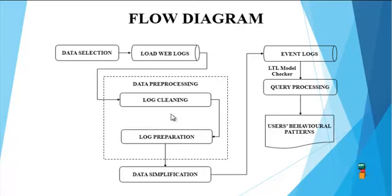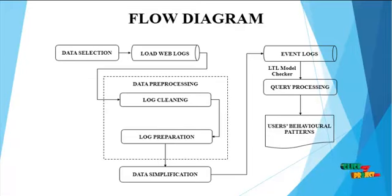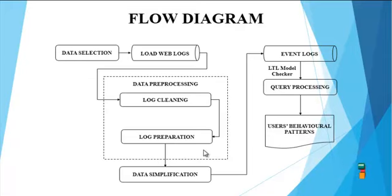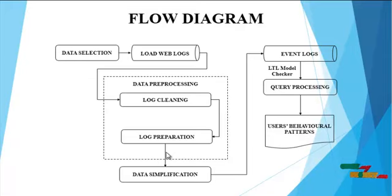Next is log preparation. In this categorization sub-phase, each record is analyzed to identify high-level events and to extract meaningful information. Next is data simplification. In this simplification sub-phase, log contents are reduced to increase the effectiveness of model checking techniques. We have reduced the amount of information in the log by filtering records that do not contain relevant information.